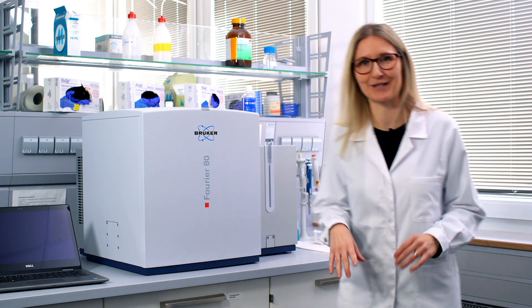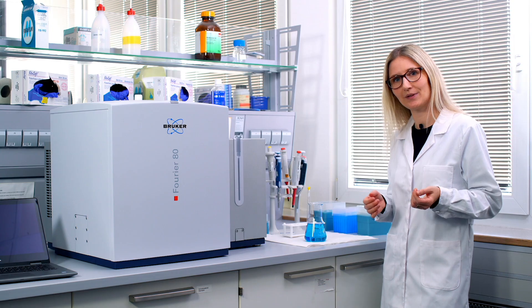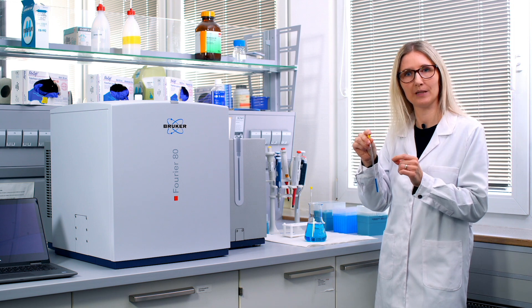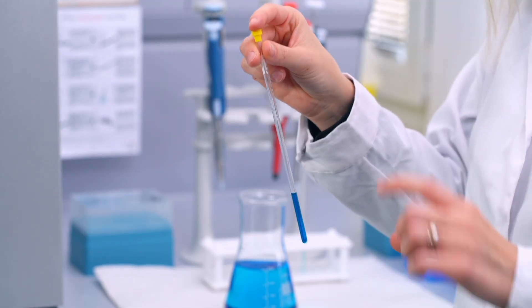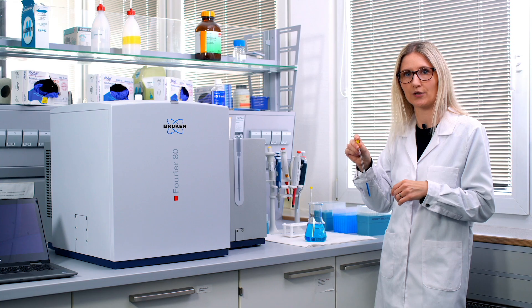But coming back to the practical part. If you want to measure an NMR sample, you just take standard seven inch long tubes with an outer diameter of five millimeters. Really the standard that you are used to from high field NMR systems. And you fill about 600 microliters of your sample inside such an NMR tube.